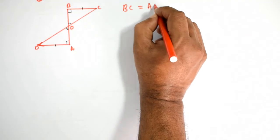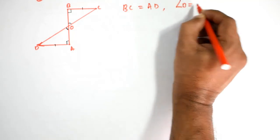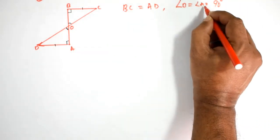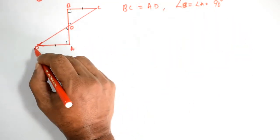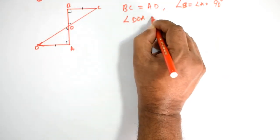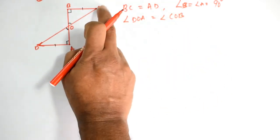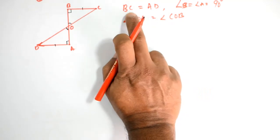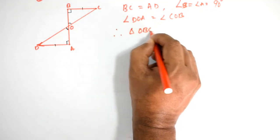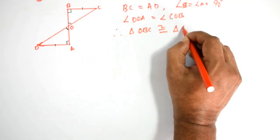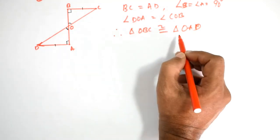Angle B equals Angle A. Angle DOA equals Angle COB. Side Angle Side — SAS. Therefore, triangle OBC is congruent to triangle OAD. Corresponding angles are equal.